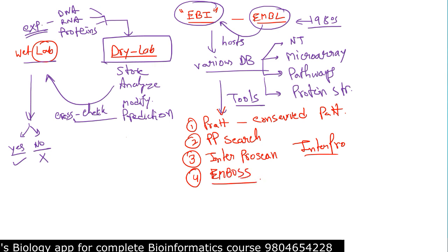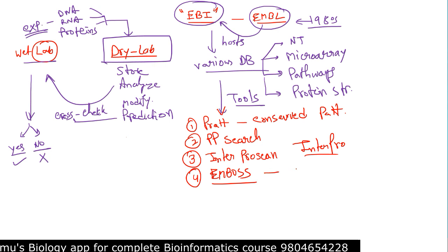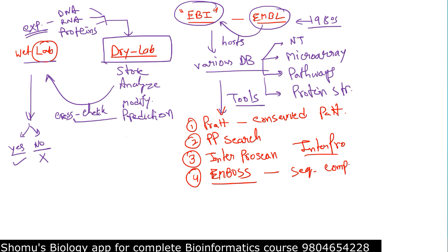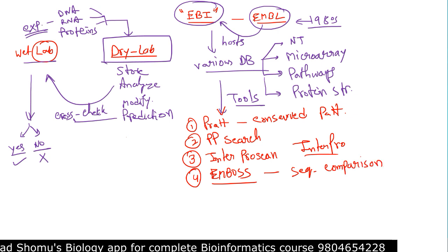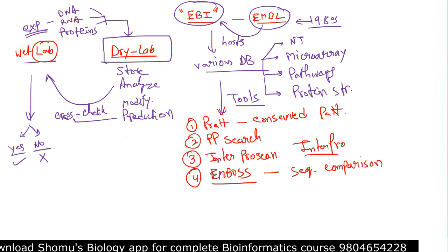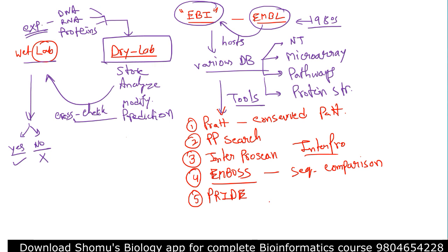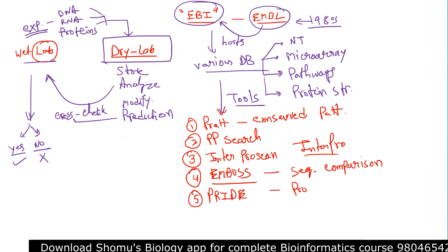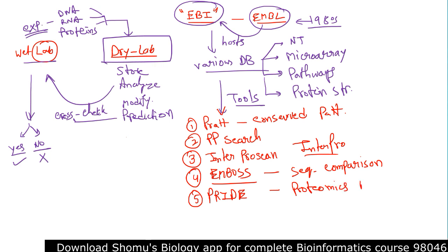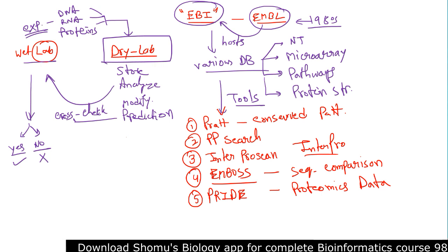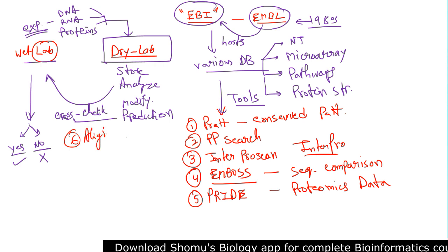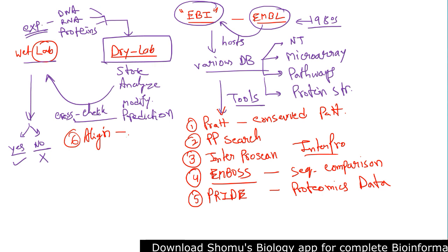Then we have EMBOSS — all capital — which is a sequence comparison tool for end-to-end comparison where every little detail is compared. We also have PRIDE — P-R-I-D-E, all capital — which is for proteomics data. Another tool is ALIGN, which is used for pairwise global and pairwise local alignment.